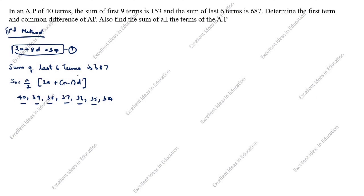The sum of last 6 terms (terms 35 through 40) equals S40 − S34. So S40 − S34 = 687.